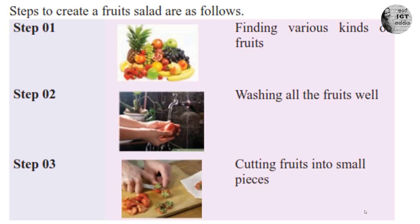Now you can see the steps to create a fruit salad. Step one: find various kinds of fruits. Step two: wash all the fruits well. Step three: cut fruits into small pieces. So now we know how to prepare a fruit salad — first find various kinds of fruits, then wash them, then cut into small pieces.